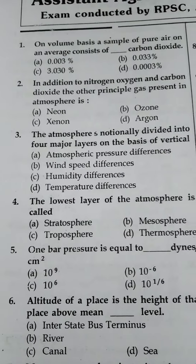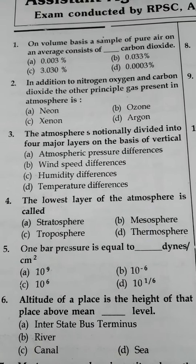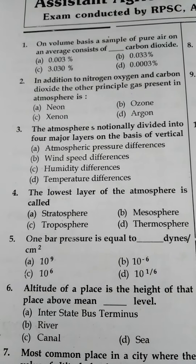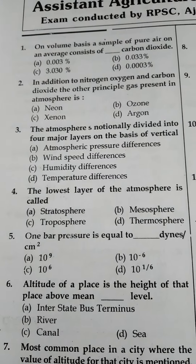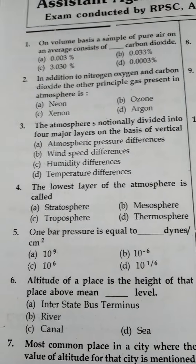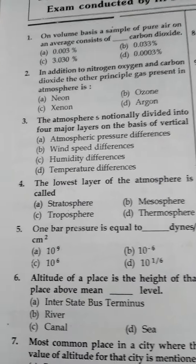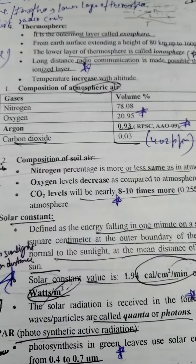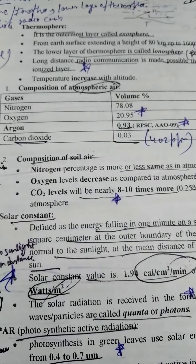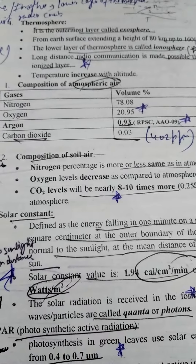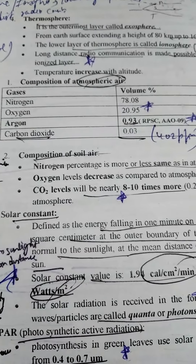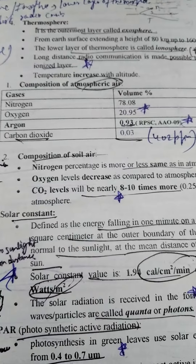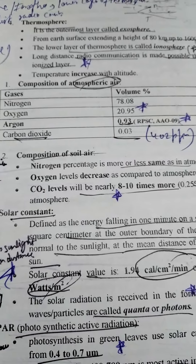The first question asks: on a volume basis, a sample of pure air on average consists of dash percent carbon dioxide. It is asking the concentration of carbon dioxide by volume in a sample of fresh air. Remember these important details: Nitrogen is 78% by volume, Oxygen is 20.95%, Argon is 0.93%, and Carbon dioxide is 0.03%.